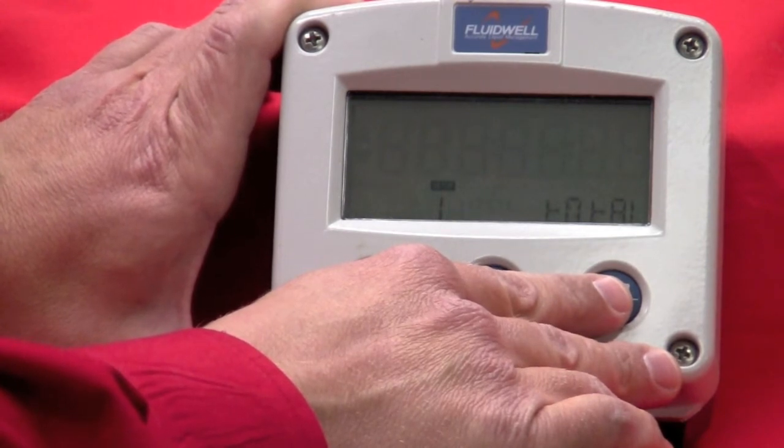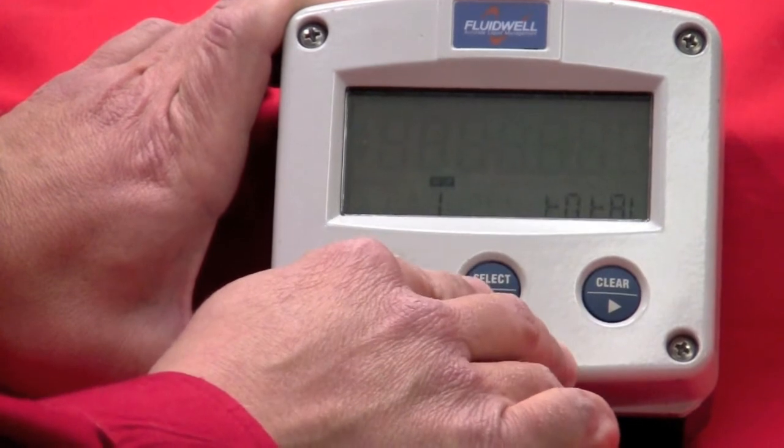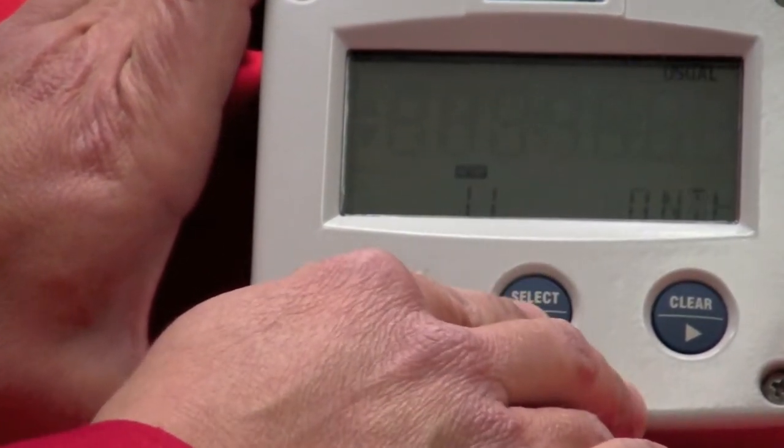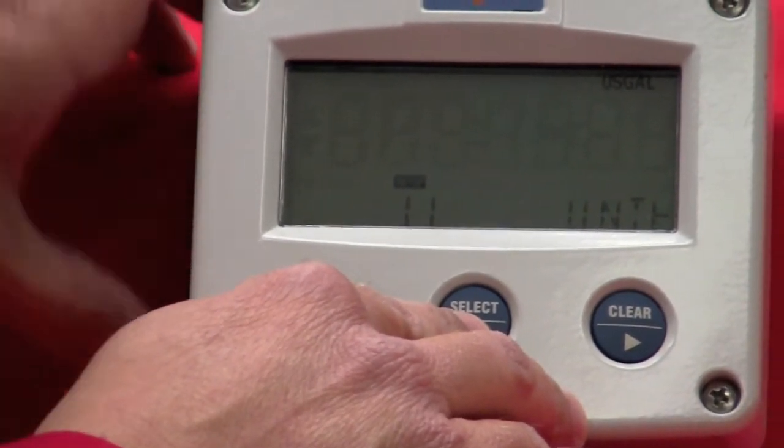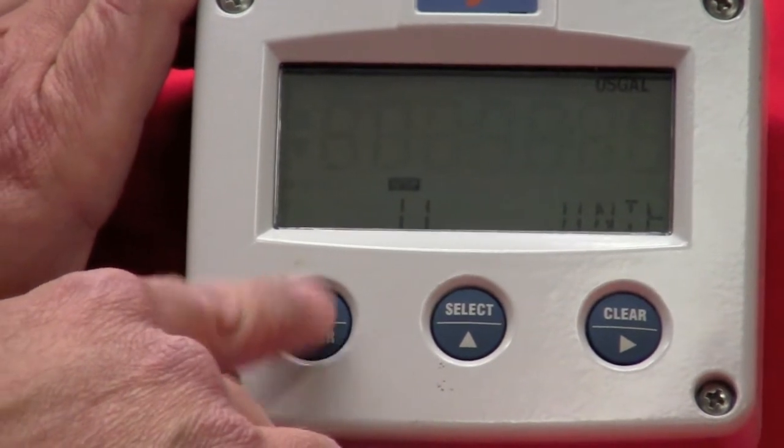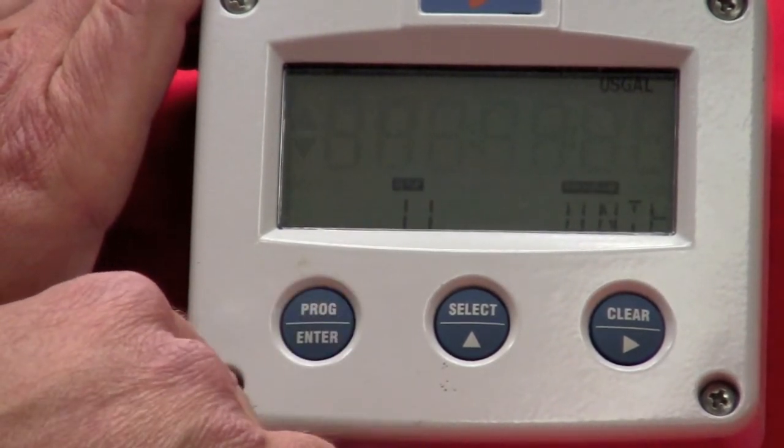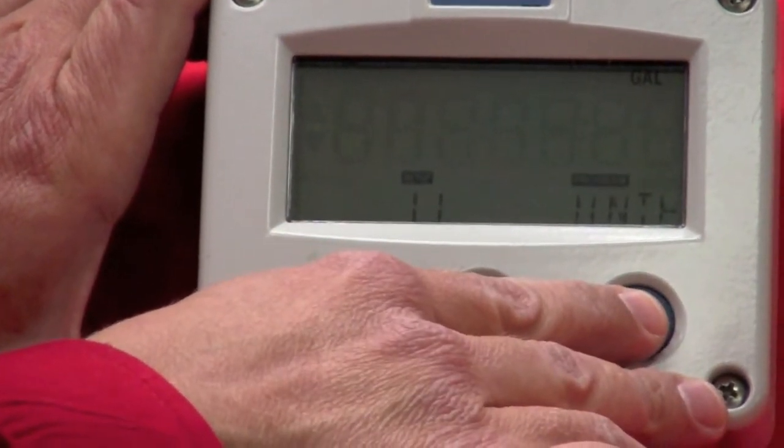To set the meter up and configure it, to drop into any of the main menus here, you're going to utilize your select key. So I'll hit it once. You'll see units. Now to program it or change the units, right now I'm in U.S. Gallons. To change that, just push and release the program key. You'll notice now I'm in Programs, Flashing, Units, and now I can scroll through the various units here.